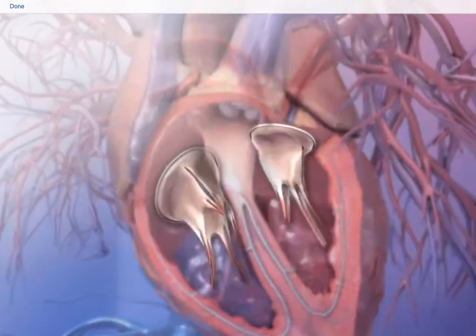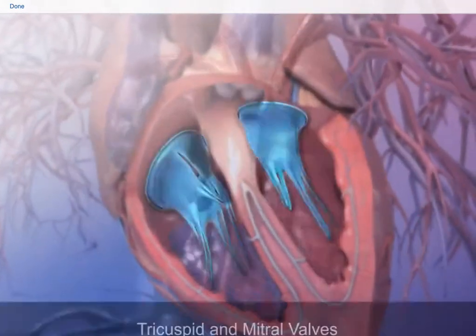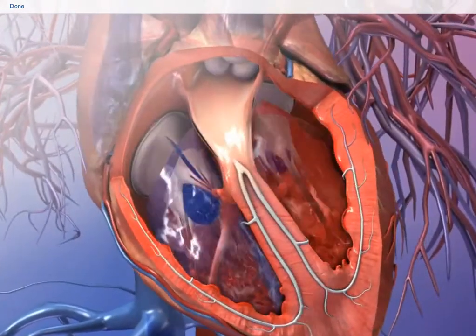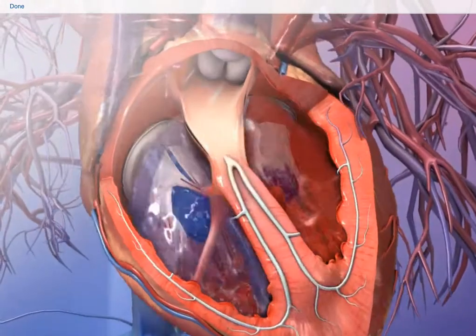The two valves located between the atria and the ventricles are called the tricuspid and mitral valves. These valves facilitate the flow of blood as it moves into the ventricles from the atria.